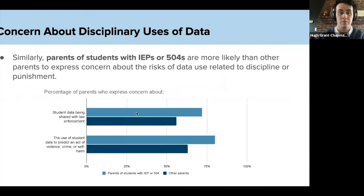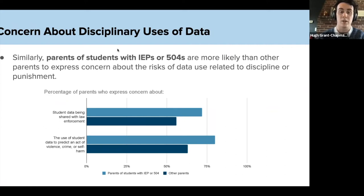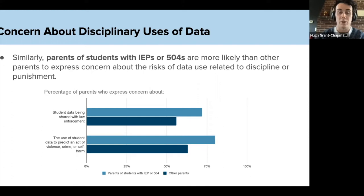When asked similar questions, we see the same kind of contrast play out in parents of students with IEPs or 504s versus parents of students who do not use those. Parents of students with IEPs or 504s are more likely than other parents to express concern about the risks of data use related to discipline or punishment. These differences are about 20 percentage points each, which really illustrates how big of a disconnect exists between these populations of parents.